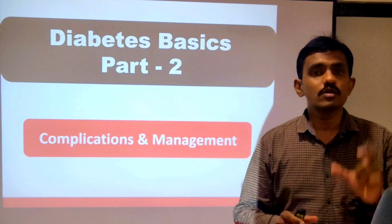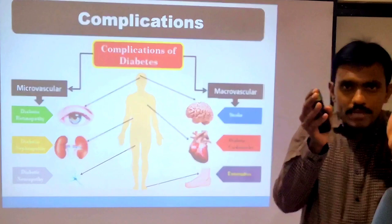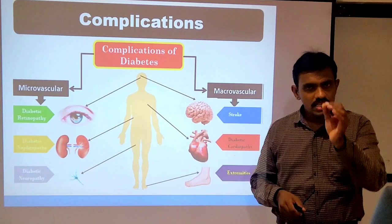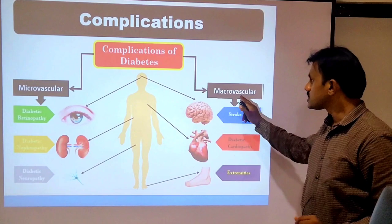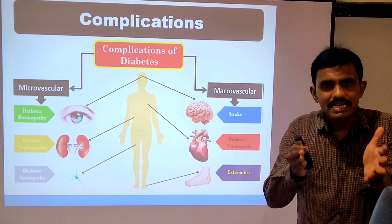If you are not treating diabetes it will produce a lot of complications. The complications of diabetes are majorly defined in two ways: one is microvascular and another is macrovascular. Micro means small — so microvascular refers to complications related to small blood vessels, and macrovascular refers to complications related to large blood vessels.